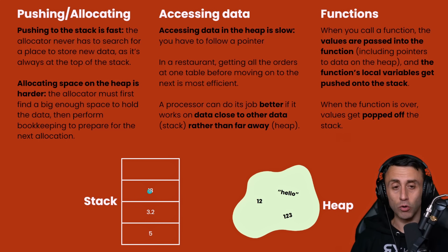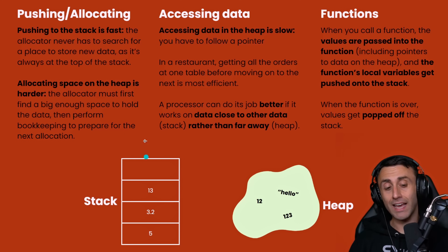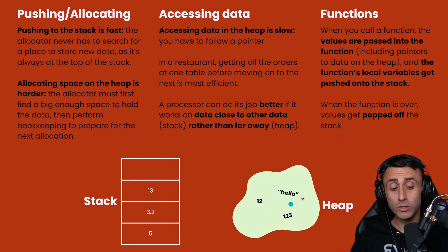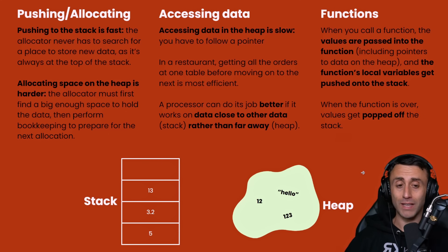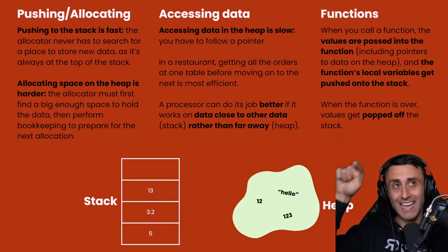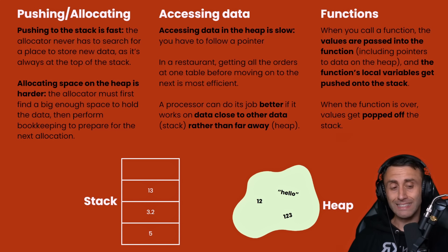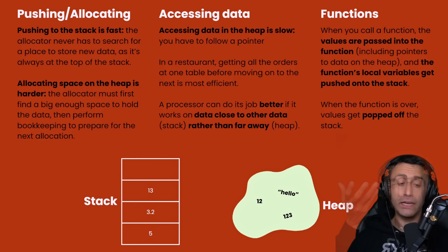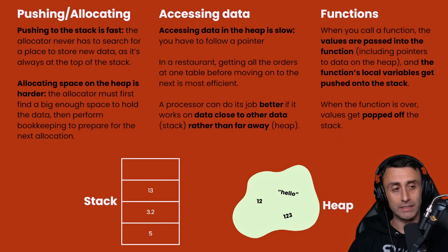Accessing data on the stack is also very quick. Accessing data on the heap is unfortunately slow because you need to follow a pointer and find that memory location. Using the restaurant analogy: waiters take all orders at the same table before moving on because it's easier to deal with data that is close together, as it is on the stack. On the heap, data can be far away — you'll find it, but it's usually slower.